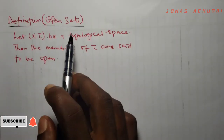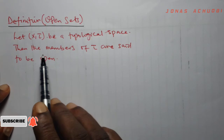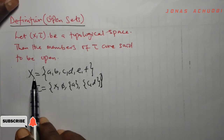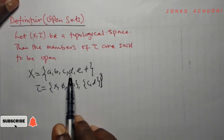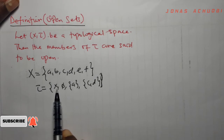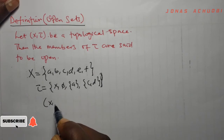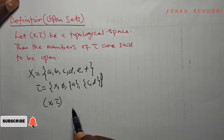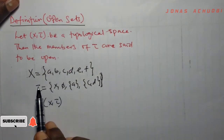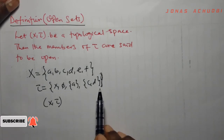Definition: open sets. Let (X, tau) be a topological space; then the members of tau are said to be open. For instance, if X is a non-empty set with elements A, B, C, D, E, and F, and tau is a topology on X with members X, phi, A, and {C, D}, then the pair (X, tau) is a topological space. The members of the topology tau — X, phi, A, and {C, D} — are called open sets of the topological space.